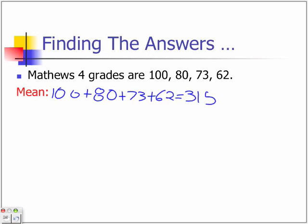And since there are 4 numbers, you divide 315 by 4. And the answer is 78.75.